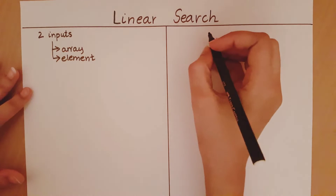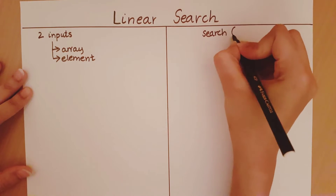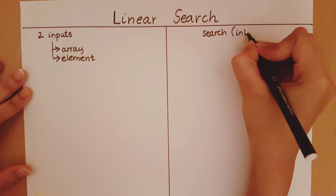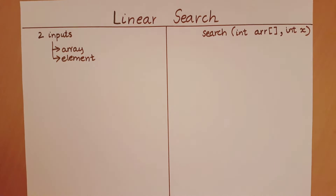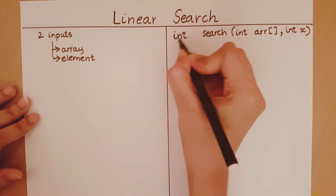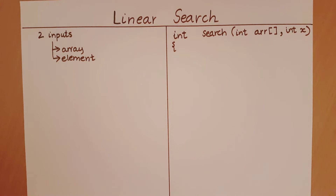Let's first define the function. I'm going to have a function called search, and I'm going to input an integer array as an example, and take x as my element. As for the return type, you can either give it as a boolean — true when the element has been found, false when it's not found — or as an integer representing the index at which the element was found. If the element is not found in the array, we return minus one.